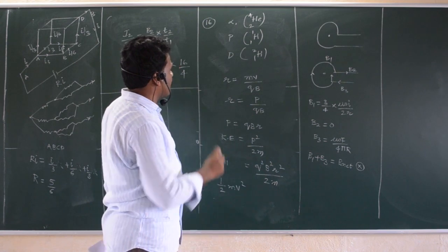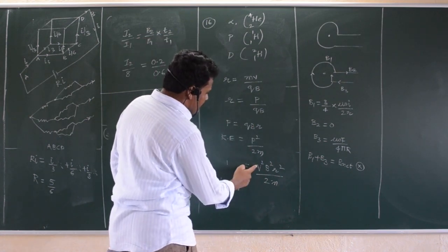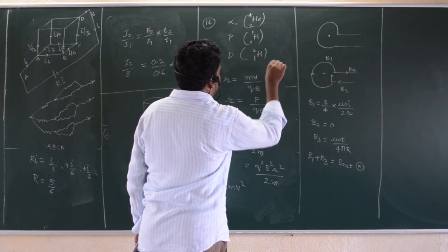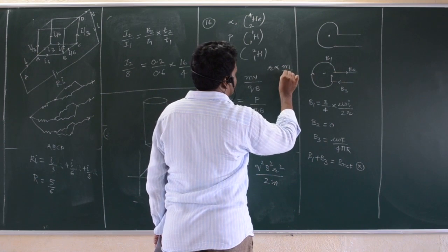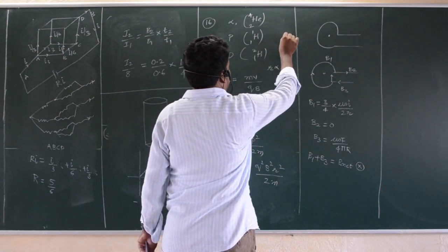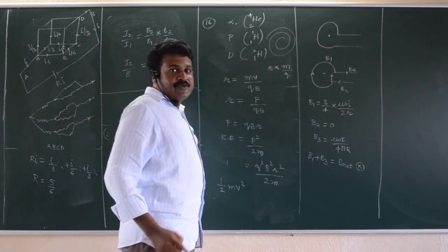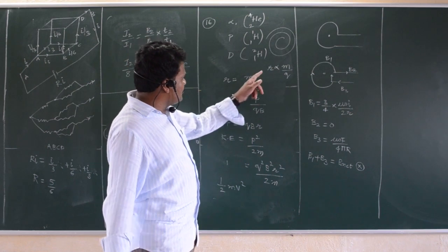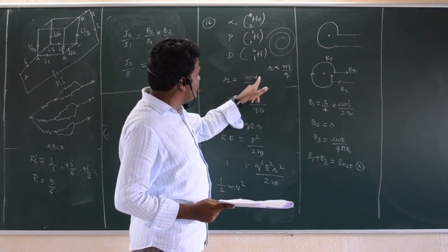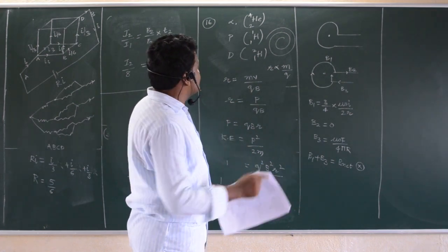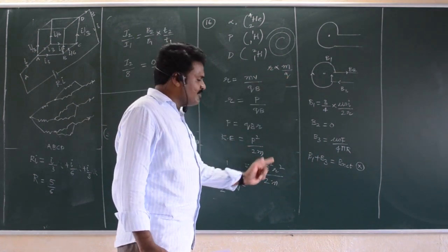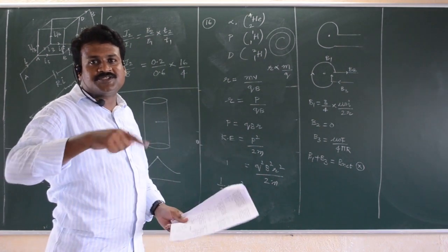Directly, R is proportional to M by Q, and kinetic energy is directly proportional to R-squared. They all enter with the same velocity and the same magnetic field under the same conditions. So if R is more, kinetic energy is more. Calculate whose radius is more and you will get the answer directly. That is the principle behind the rotation of charged particles in a cyclotron.